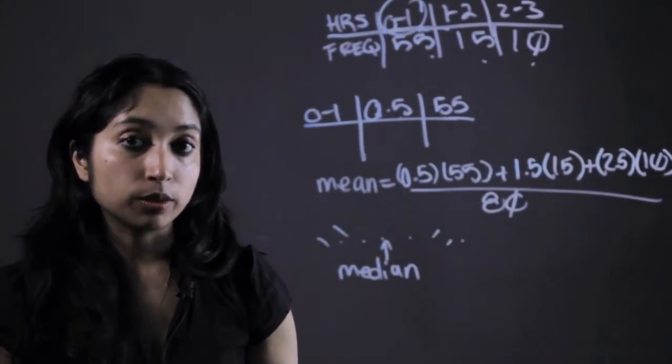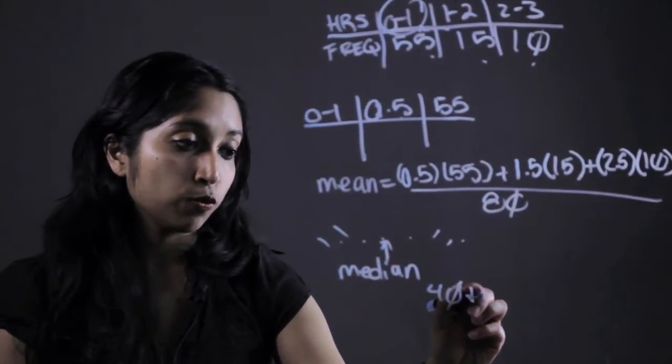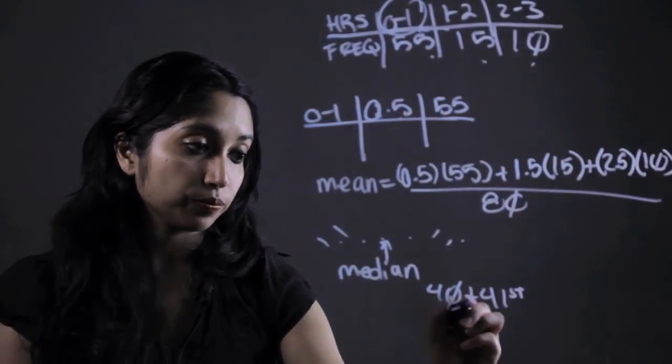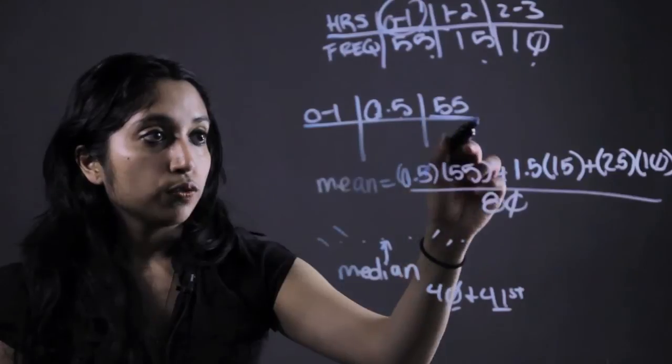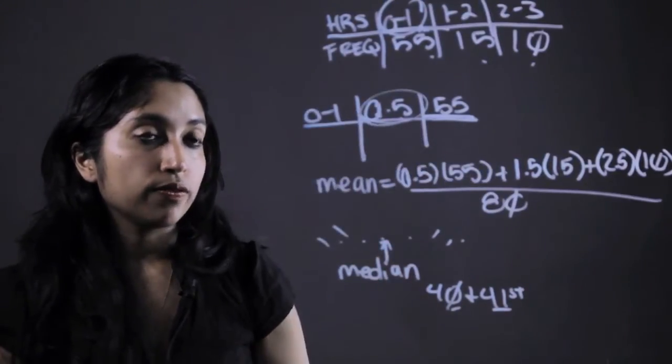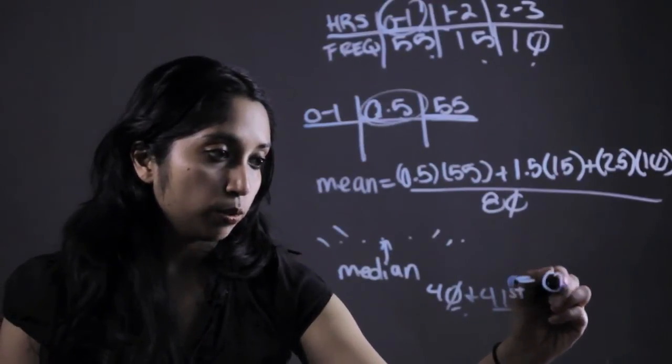So we have 80 numbers. The middle point right here is going to occur between the 40th and 41st value, right? Because 80 over 2 is 40. Now if we look, the first 55 values have a 0.5. So regardless, our median is just going to be 0.5.